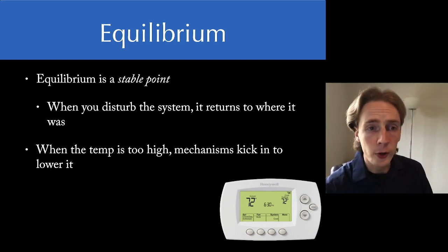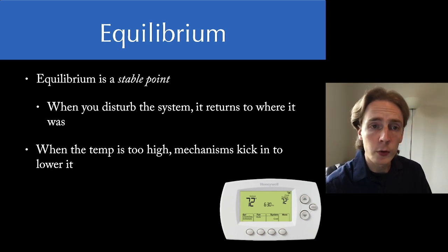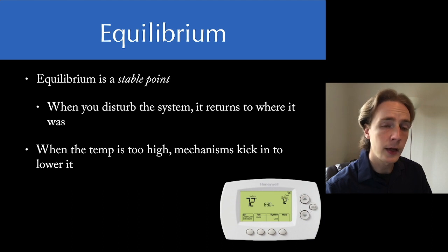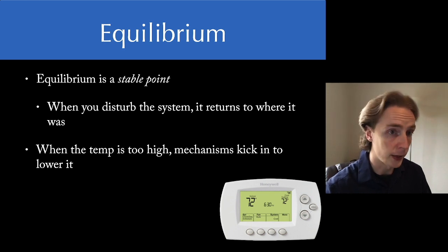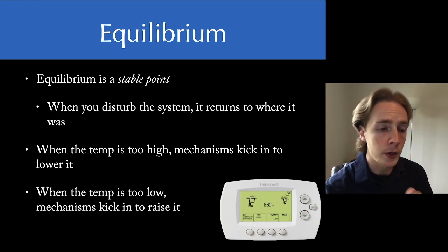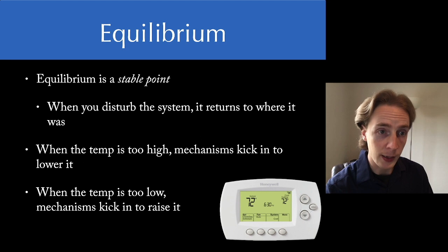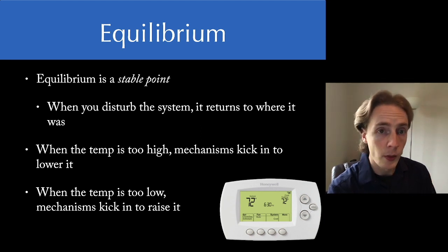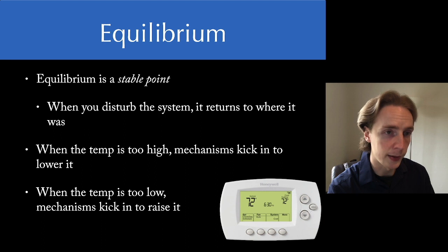For example, a thermostat is an equilibrium system. If you leave the door open when it's snowing outside, the temperature in your house is going to fall, the thermostat is going to notice that, the heater is going to kick on, and that's going to raise the temperature back to the set point of 72 degrees. On the other hand, when you leave the door open on a summer's day, the AC is going to come on. In order to call a system an equilibrium system, we have to know the variable that returns to equilibrium and the process that gets us back there.